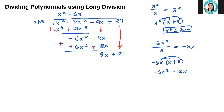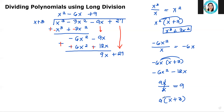So we now have 9x plus 27. The first term, 9x, divided by x gives us 9. So we have positive 9. Then we will multiply positive 9 to x plus 3: that's 9 times x plus 3, which gives us 9x plus 27. Then we will write it here: 9x plus 27.